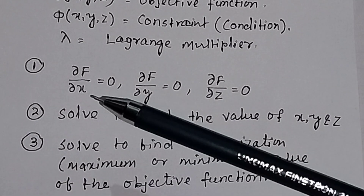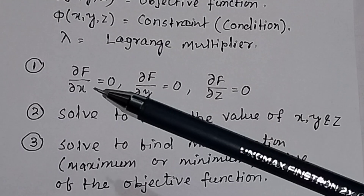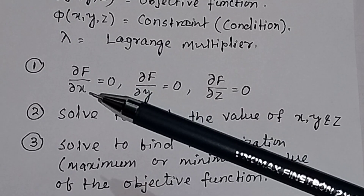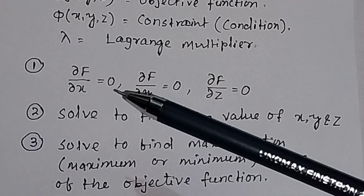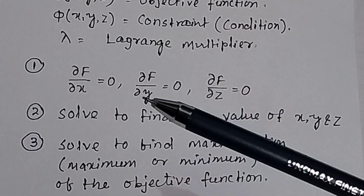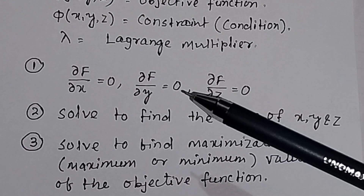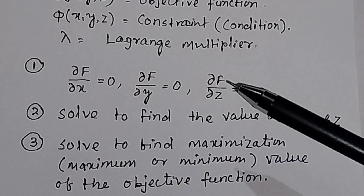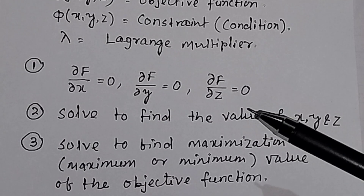Step 1: Take the partial derivative of the Lagrange function f with respect to x, set it equal to 0. Then take the partial derivative with respect to y, set it equal to 0, and the partial derivative with respect to z, set it equal to 0.